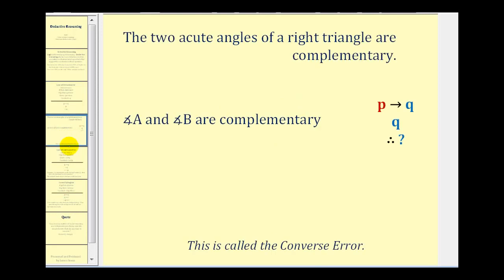Now we do have to be a little bit careful about this. Here's another conditional statement: the two acute angles of a right triangle are complementary. So if we know that to be true, if we're given that angle A and angle B are complementary, can we draw a conclusion?